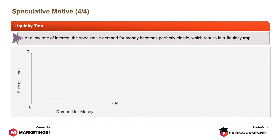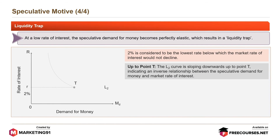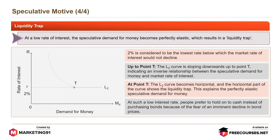The x-axis represents demand for money and the y-axis represents rate of interest. 2% is considered to be the lowest rate below which the market rate of interest would not decline. Up to point T, the L2 curve is sloping downwards, indicating an inverse relationship between the speculative demand for money and the market rate of interest. At point T, the L2 curve becomes horizontal, showing the liquidity trap — perfectly elastic speculative demand for money. At such a low interest rate, people prefer to hold on to cash instead of purchasing bonds because of the fear of an imminent decline in bond prices.